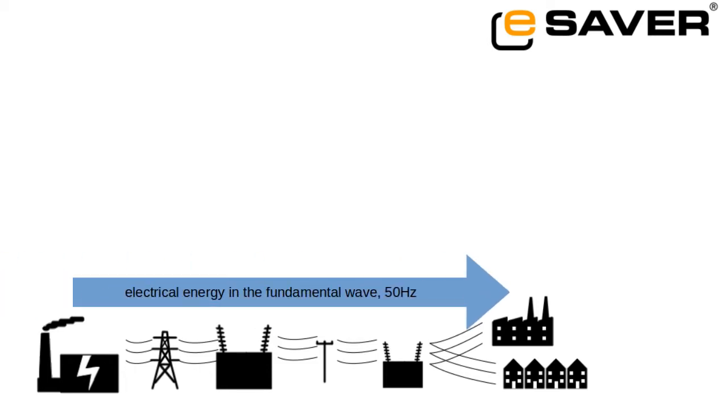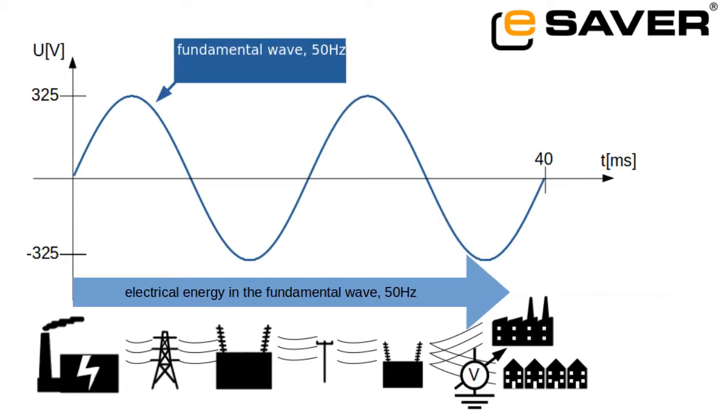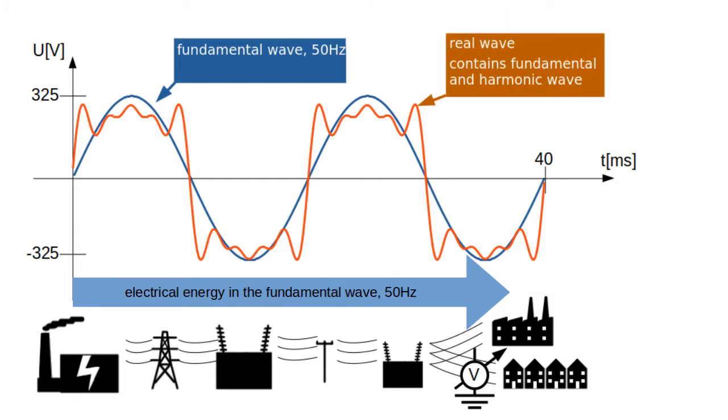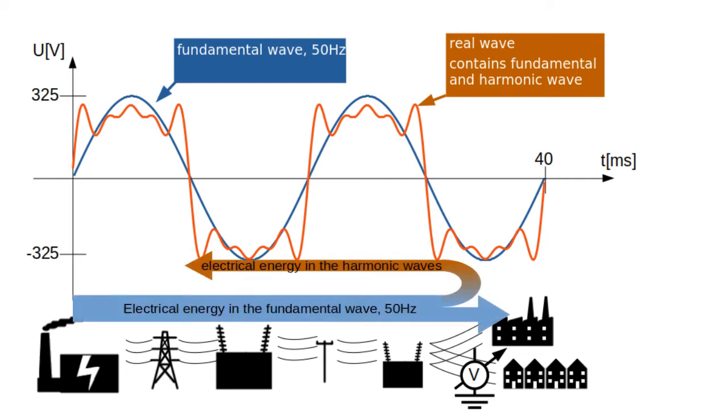Theoretically, the voltage on this network is a 50 Hz sine wave voltage. In reality, however, the sine wave is distorted. That's because some devices have a nonlinear load, such as diodes or switching regulators. These devices have repercussions on the voltage curve on the network. They generate harmonic waves.